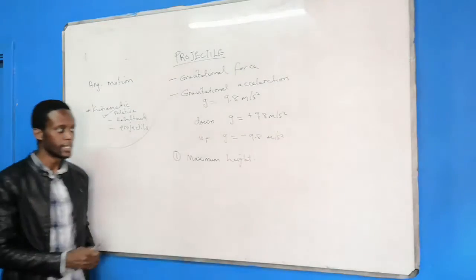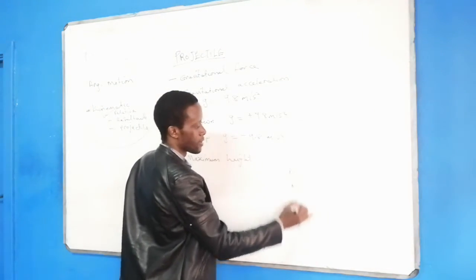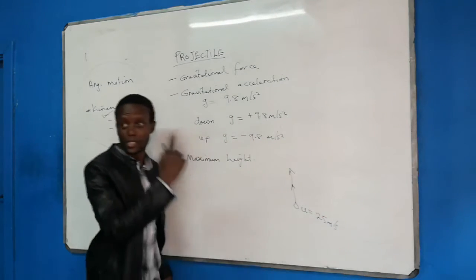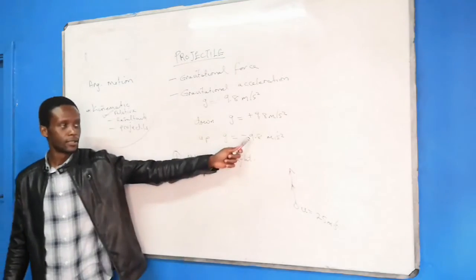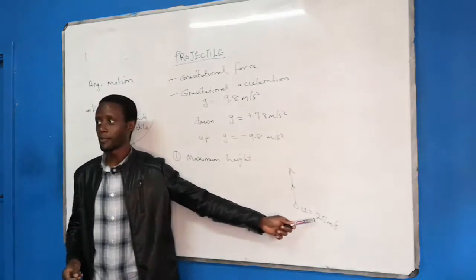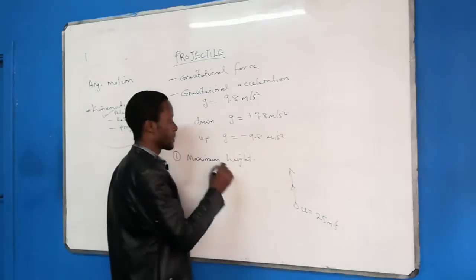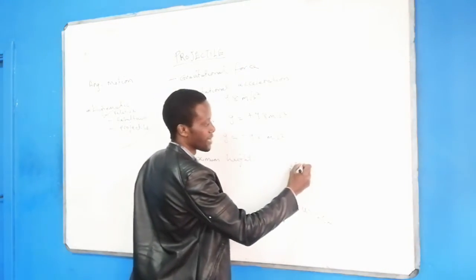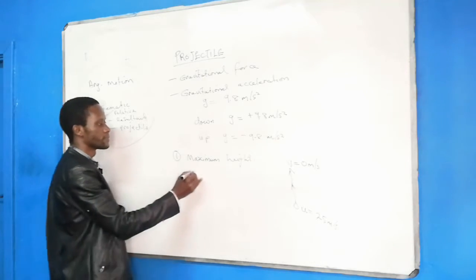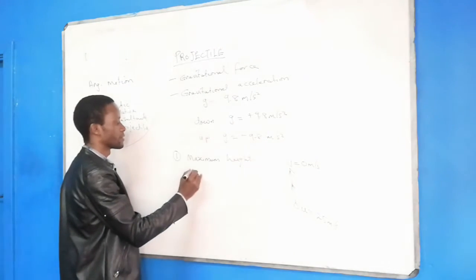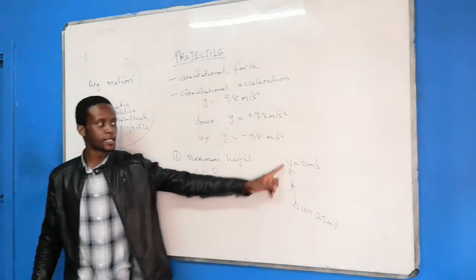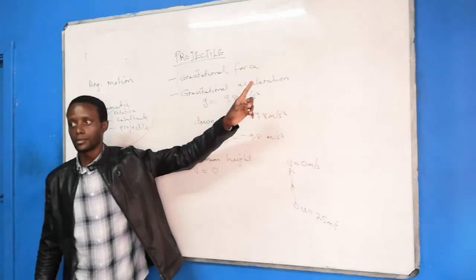If you throw an object upwards with an initial velocity of, say, 25 meters per second, after each second gravity reduces the velocity by 9.8 until the 25 is used up. At the maximum height, the final velocity is zero — the object cannot go up anymore and has to fall.